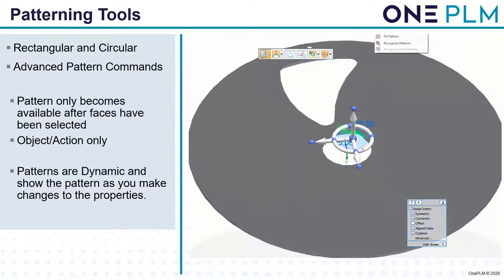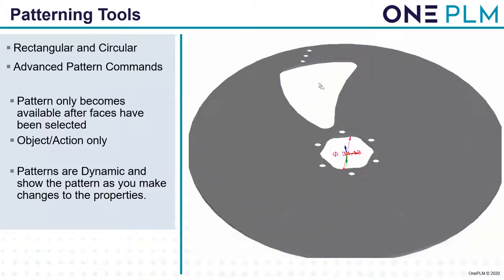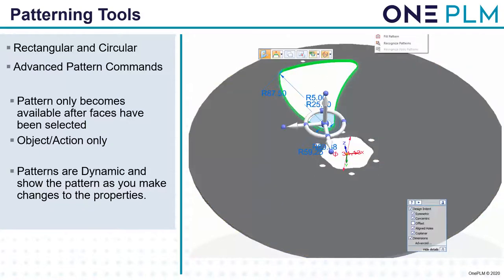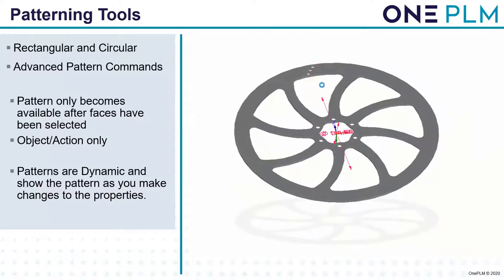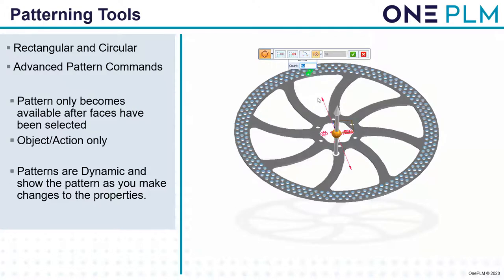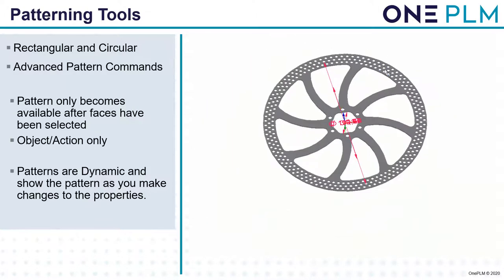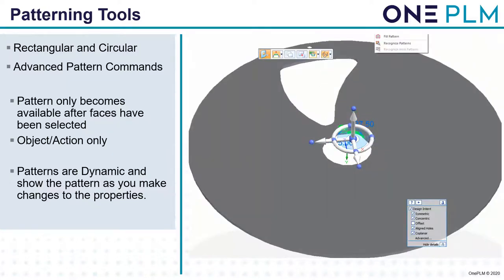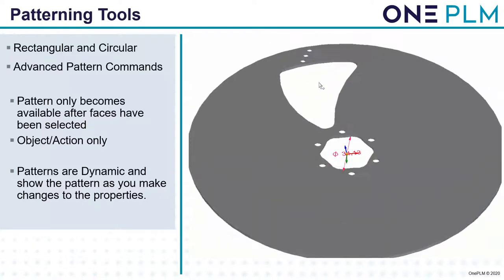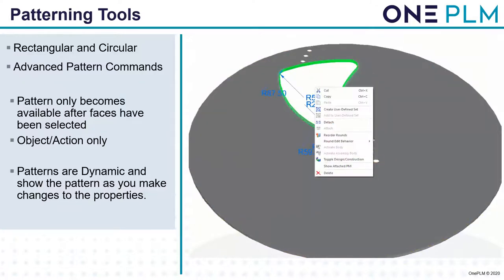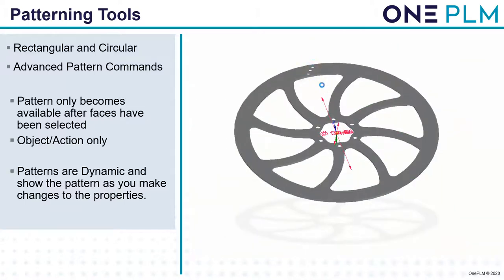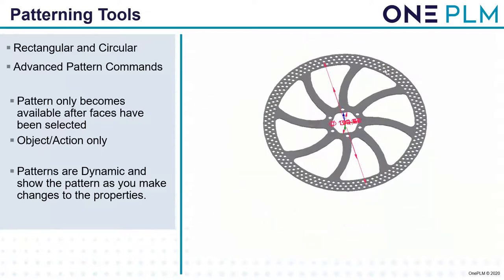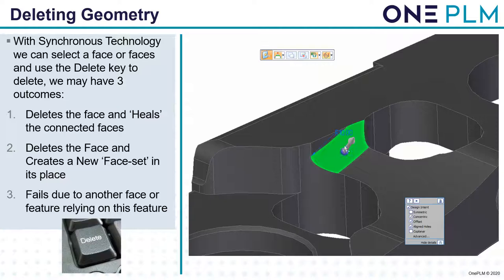Other pattern tools include standard rectangular and circular patterns, and more advanced ones such as pattern in area, pattern by table, and pattern along a curve. Patterns only become available after faces have been selected — this is classed as object-action. Patterns are dynamic and show the pattern as you make changes to properties. In this example: select the cutout and hole, select the pattern command, drag to the center point. Using the selection manager with tangent chain for another pattern, drag to the same center position. When we change the count from six to eight we can dynamically see that changing. A very nice way of seeing how that works.